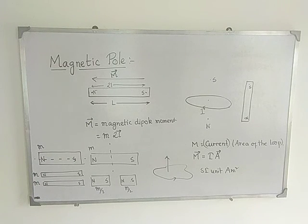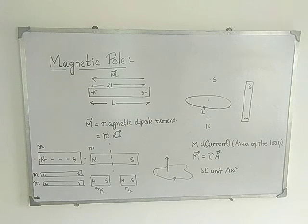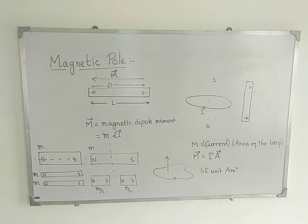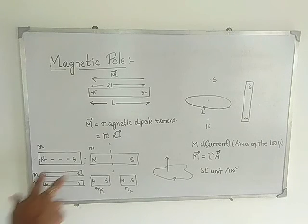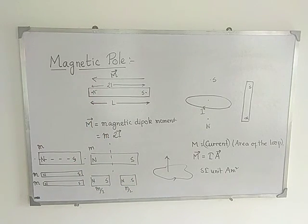So this is roughly the idea of magnetic poles and magnetic dipoles — the magnetic dipole moment, its direction in case of the bar magnet and the current-carrying loop, and what happens when you cut the magnet perpendicular or parallel to its length and how the magnetic pole strength changes. We have also discussed the geometric length and the magnetic length of the bar magnet. Thank you.